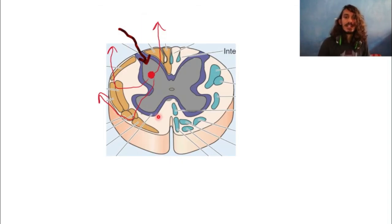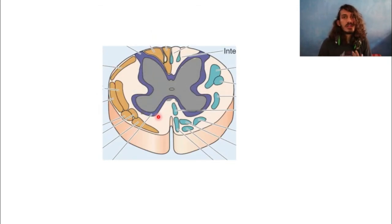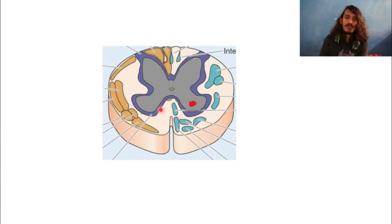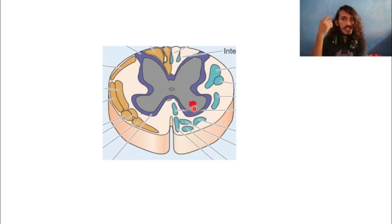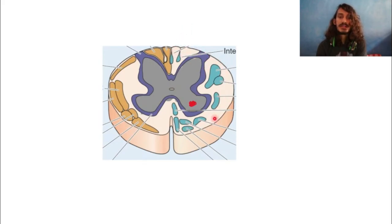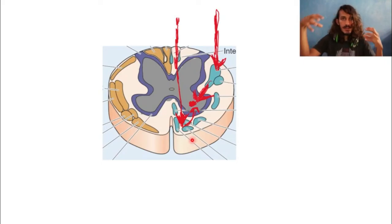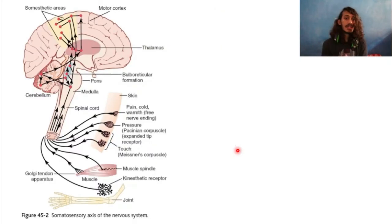For motor function, an alpha motor neuron in the anterior horn must be stimulated — either through a reflex or by descending signals from the motor cortex through pyramidal tracts, which travel in the lateral or anterior white matter columns. So impulses from the brain descend through the white matter fibers and stimulate the anterior horn cell, which then sends the signal out to the muscle.